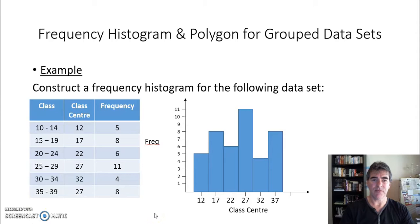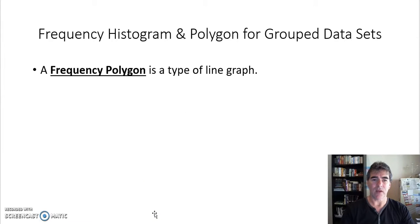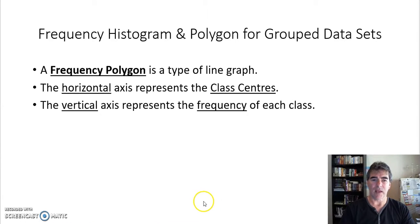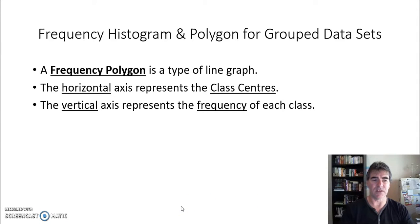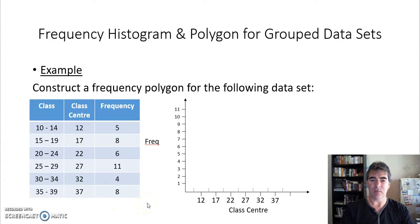So there's our frequency histogram. Let's go and have a look at now our frequency polygon. Remember it's a type of line graph, so we've got again our horizontal axis is our class centers and our vertical axis is our frequency for each of the classes. So we've already put our table there together and completed that class centers set up our axis the way we did before, again remembering class centers along here.